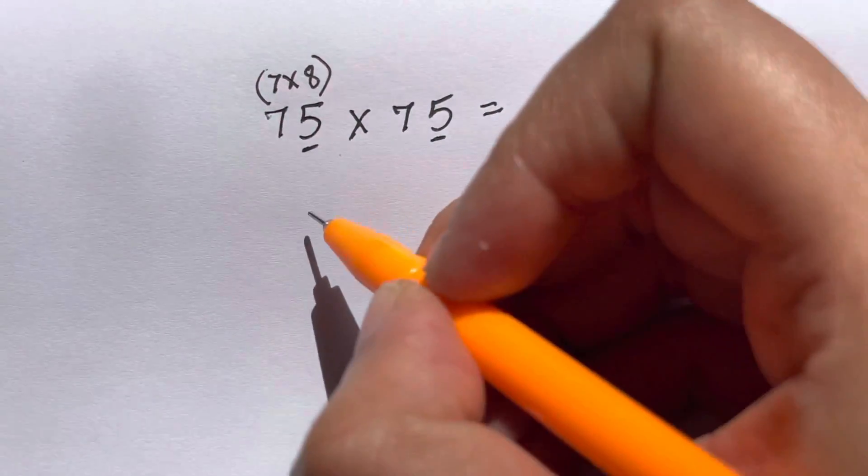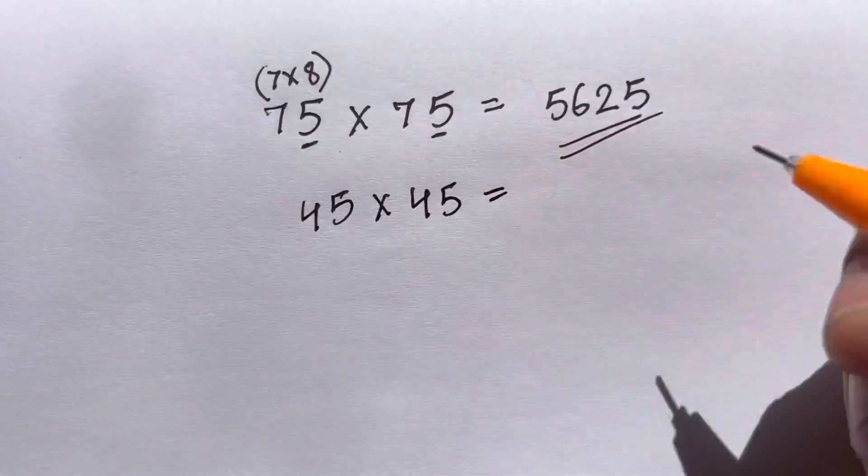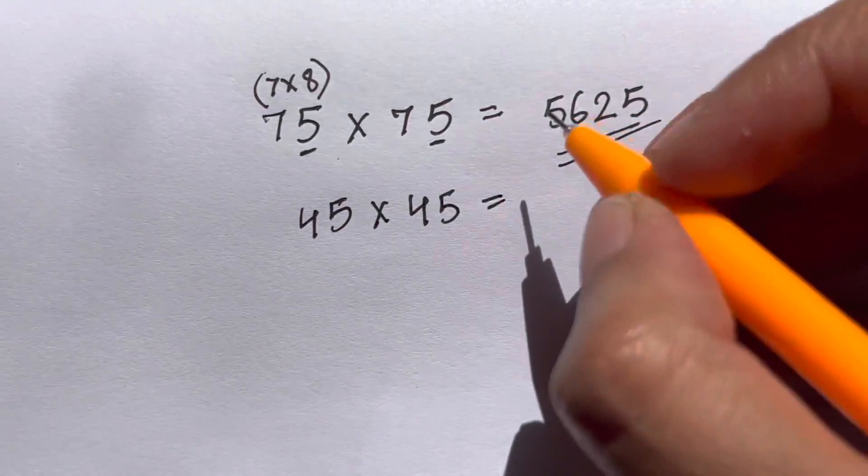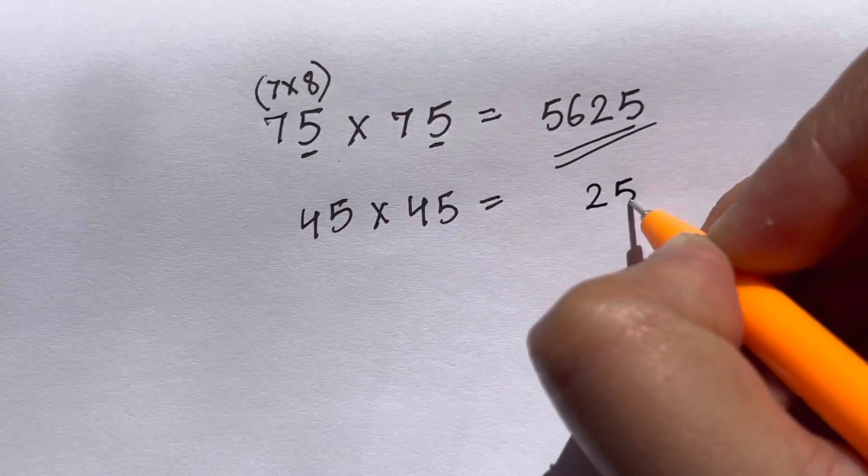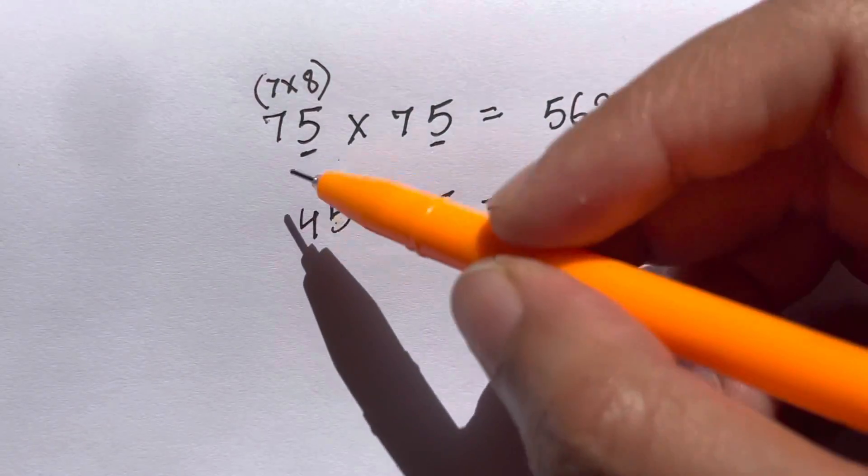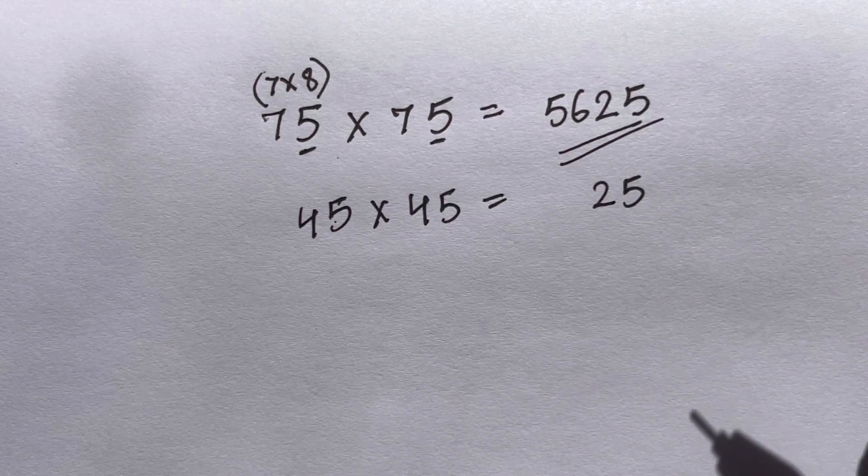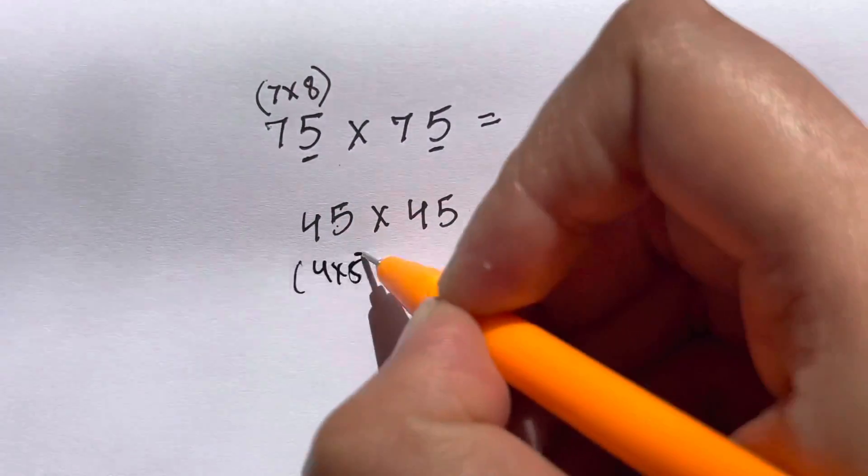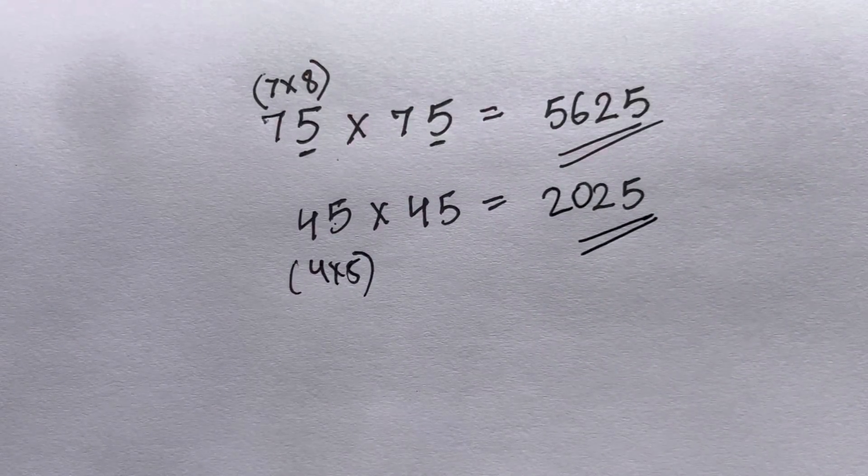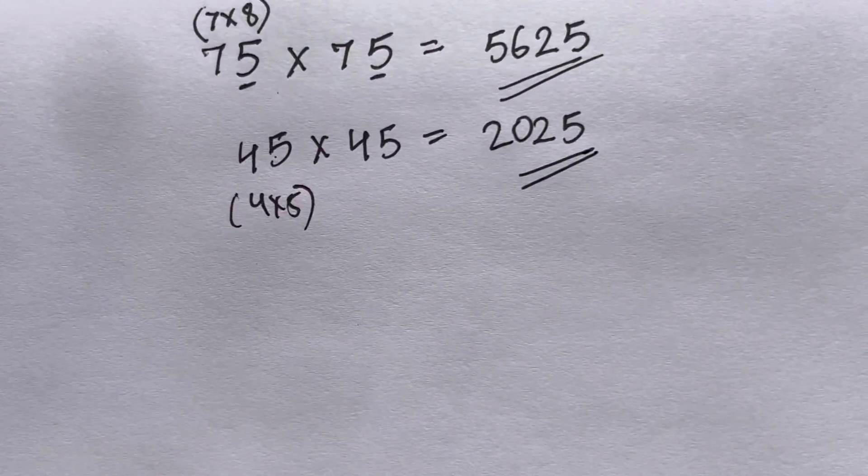Let's do another example: 45 times 45. You can tell me the answer in your mind. I'm just going to write 25 because 5 times 5 is 25. What number comes after 4? The next consecutive number is 5, so multiply 4 with 5—4 times 5 is 20. And that's your answer: 2025. Isn't it amazing?